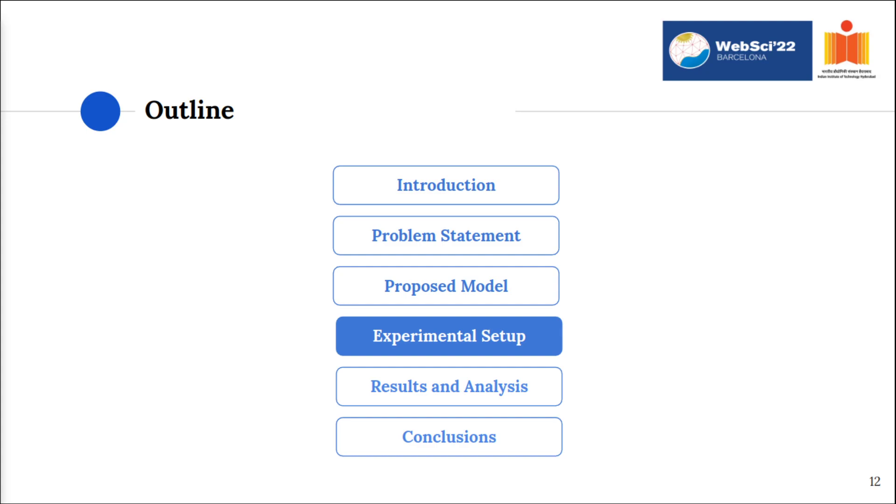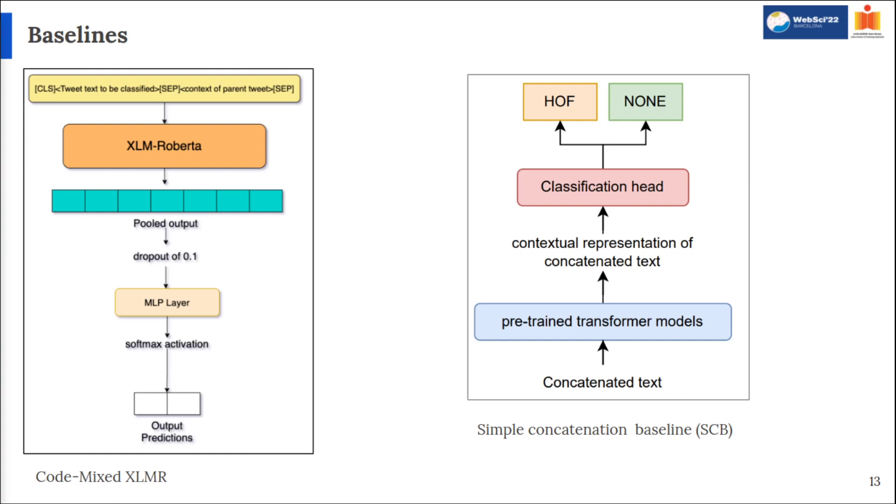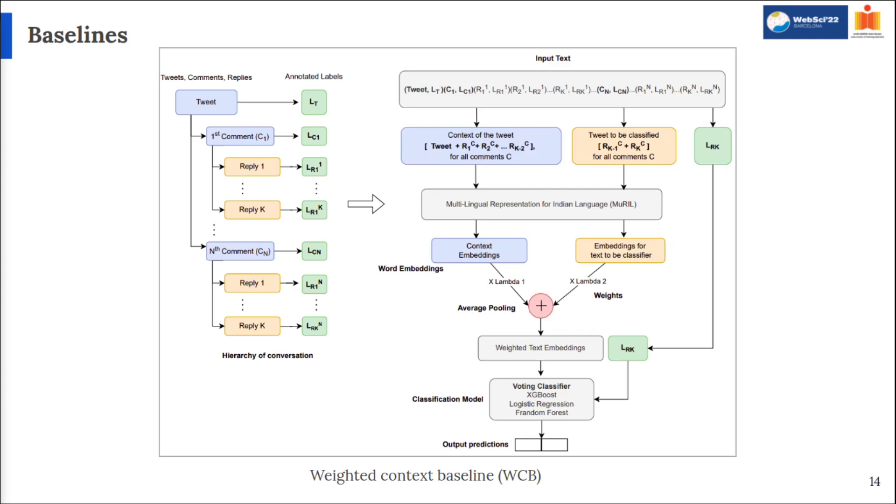For this experimental setup, I would like to call Aditi Bhagwara to continue on with the presentation. Having a model setup, we will now look into experimental setup for training. We employed a number of baselines to validate our proposed model. CodeMix XLMR on the left was picked up from a reference paper working on a similar problem statement. The baseline on the right follows a naive additive concatenation of post with its comments and replies in a sequential manner as they are posted. The combined text is passed through a pre-trained transformer model for embeddings and a classification head for predictions.